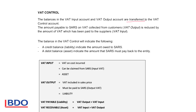If this balance is a credit balance, it indicates a liability — that the amount is owed to SARS and the business will have to pay money to SARS. If the balancing figure is a debit balance, it is an asset, meaning SARS must pay money back to the entity, so the business will receive money back from SARS in the future and will not have to pay in that specific month.